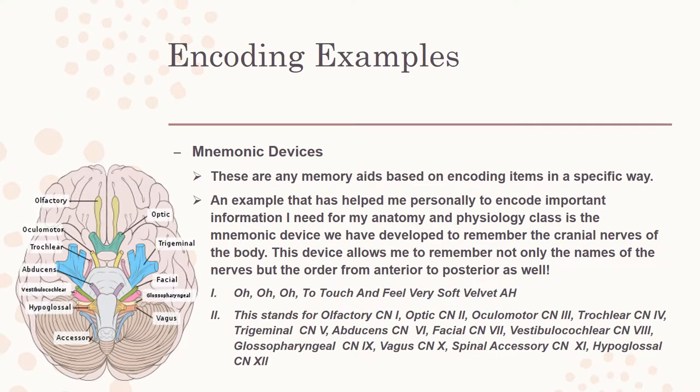Some examples of encoding are mnemonic devices. These are any memory aids based on encoding items in a specific way. An example that has helped me personally to encode important information I need for my anatomy and physiology class is a mnemonic device we developed to remember the cranial nerves of the body — not only the names of the nerves, but the order from anterior to posterior as well.